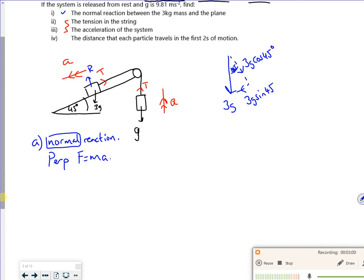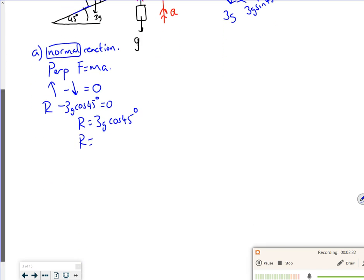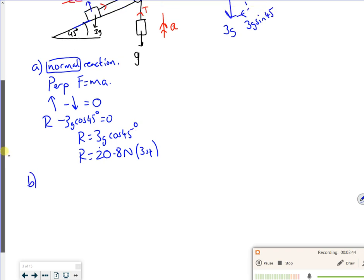It's in equilibrium because it's not lifting off the slope and it's not burying through the slope. So up minus down is equal to zero. Its acceleration is in parallel to the slope, not perpendicular. So up would be R, and down would be the 3g cos 45. So my R value is 3g cos 45, which to 3 sig figs, because G is 9.81, R is 20.8 newtons to 3 sig figs. There we go. So we want to do that if we're working out the friction, if it wasn't smooth. But it is smooth, so there's no real reason for working out R.